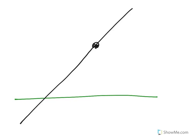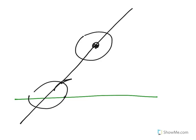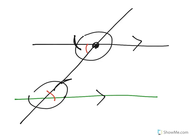Euclid's fifth postulate says — in one variation — that there's only one line parallel to a given line through a given point. The way we find it is to draw any slanted line through the point at any angle, then do the process of copying this angle over there. When we connect the dots, we've copied the angle. Since the alternate interior angles are congruent, the lines are parallel. That's how you construct a parallel line.